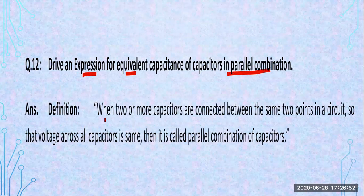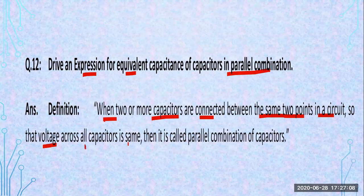Definition: when two or more capacitors are connected between the same two points in a circuit. In case of series they were not having the same point — they were different. So the voltage across all the capacitors is the same; then it is called parallel combination of capacitors. Voltage in parallel is the same.